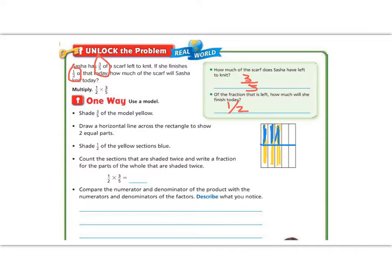Now count the sections that are shaded twice. So we have three sections that I shaded twice out of, count up all the squares now, ten total squares. Now compare the numerator and denominator of the product with the numerator and denominator of the factors. What do we notice? We notice that if I have one times three, which are my numerators, I get three. And if I have two times five, which are my denominators, I get 10, which gives me three tenths. So when I multiply a fraction times a fraction, I multiply straight across the top and straight across the bottom.